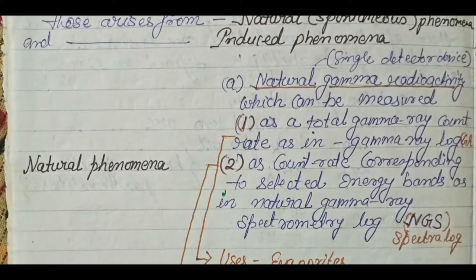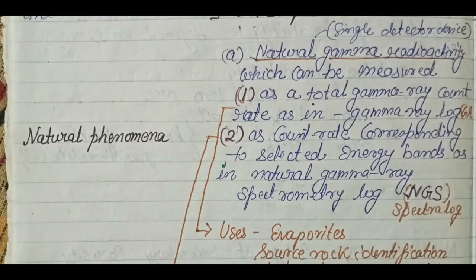There is also a log called the spectrometry gamma ray log. In that log, we try to measure how individual elements are contributing to the energy. In the natural gamma ray log we measure total energy, but in the spectrometry gamma ray log we see how individual elements contribute. The count rays correspond to selected energy bands.